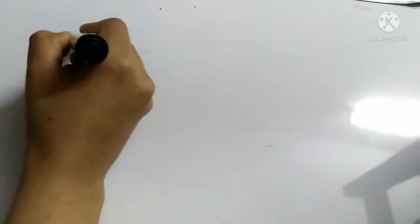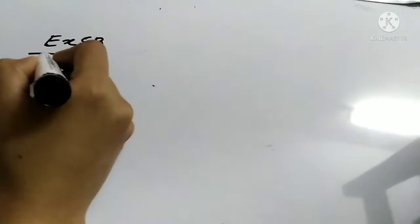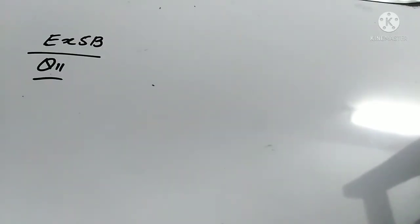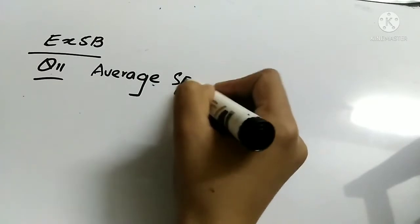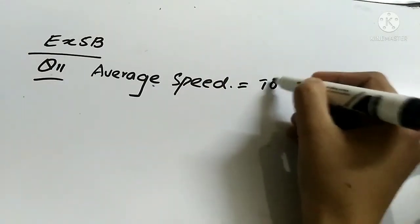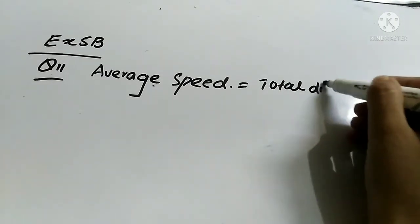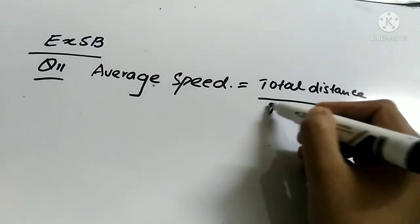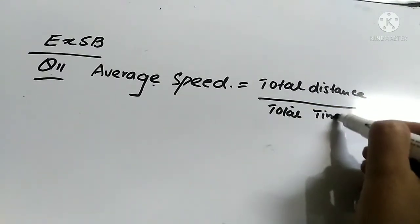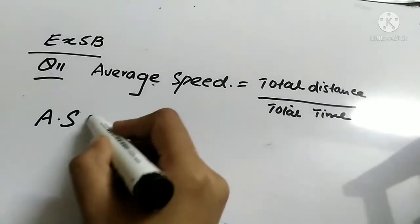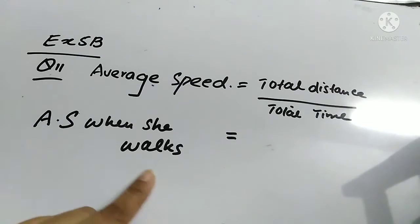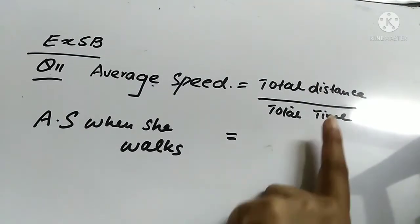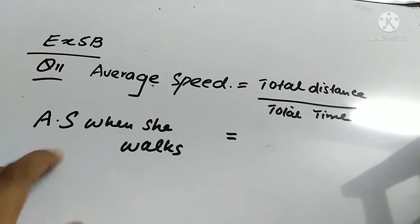We are solving Exercise 5B, Question 11. Do you know the formula to find average speed? The formula is: Average Speed = Total Distance ÷ Total Time. So when she walks, we put the average speed and the time into the formula. We do not know the total distance — we just know the time — so I'll put the values in the formula.